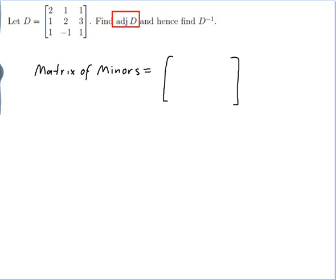So what we do is this: we go back to D and we begin by looking at an entry of D, and we cross out the row and column that it is in and we find the determinant of the resulting matrix. So the determinant of this matrix is 2×1 minus (−1×3), which is 5, and I put the answer 5 in the matching position of the matrix of minors.